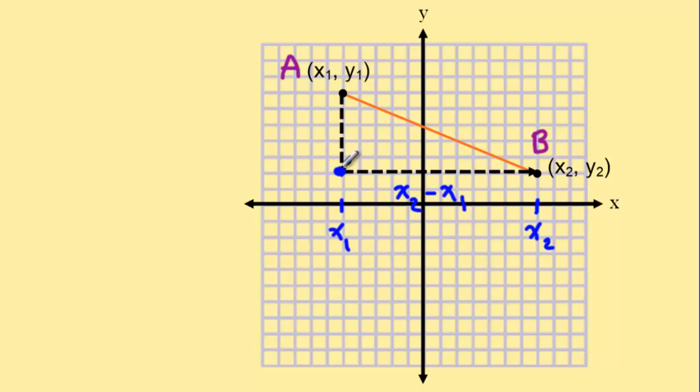The same logic will apply up here. We know that the y value at this dot right here is y2. And we know the y value at this dot right here is y1. So if we want to figure out the difference in distance, we're going to say, well, that's y2 minus y1.